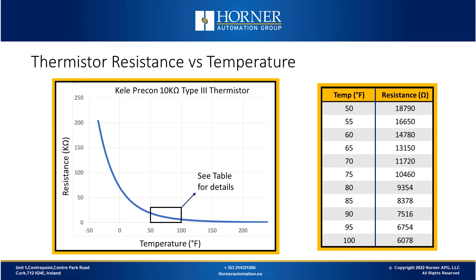Now we'll look at the thermistor resistance versus temperature curve shown in the middle of the screen, and we can see that it's an exponential relationship. The temperature ranges shown are approximately minus 50 degrees Fahrenheit to about 240 degrees Fahrenheit, with resistance going over 200K ohms and well below 1K at the high end. On the right, we can see a segment of the thermistor chart covering 50 to 100 degrees Fahrenheit — the ambient range very commonly used in indoor applications — and even in that limited range there's quite a difference in resistance.